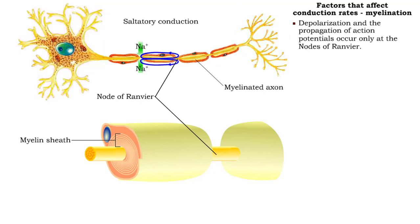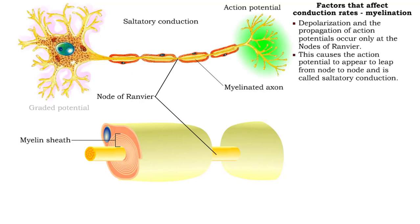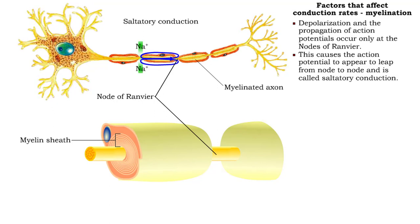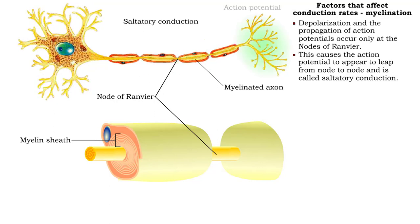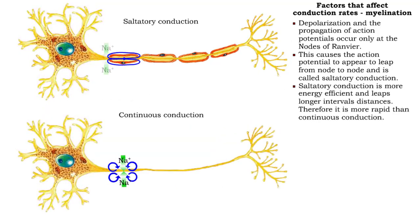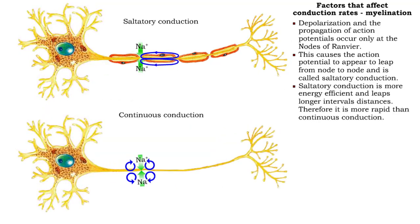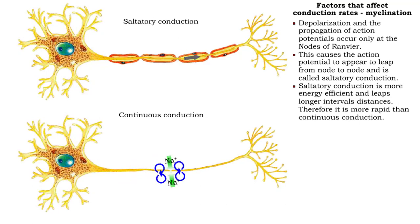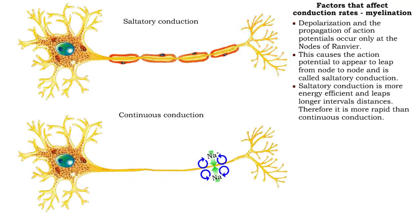depolarization of myelinated axons occurs only at the nodes of Ranvier. This form of conduction, where the signal appears to leap from node to node, is called saltatory conduction. Energy efficiency and longer distance between depolarization sites make saltatory conduction much more rapid than continuous conduction.